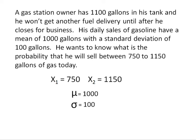Back to our gas station, the owner still has 1,100 gallons in his tank. He has average sales of 1,000 gallons per day with a standard deviation of 100 gallons. Now he wants to know the probability that he will sell between 750 and 1,150 gallons of gas today. So we have two values of x: a lower limit at 750 and an upper limit of 1,150.